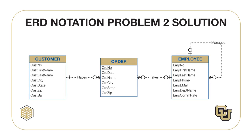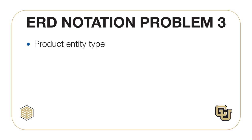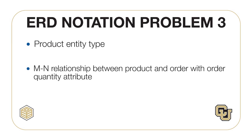Problem 1 involved the Customer and Order entity types in the Places relationship. Problem 2 involved the addition of the Employee entity type, along with the Takes and Manages relationships. Note that the Manages relationship is self-referencing to represent an organization chart. You should extend the ERD from Problem 2 with the Product entity type and a many-to-many relationship between Product and Order.